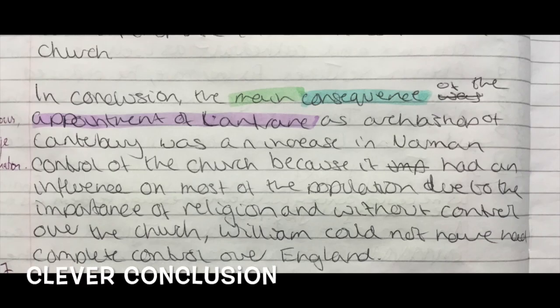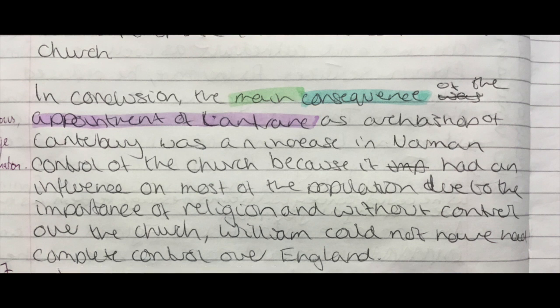Here's a wonderful conclusion and a great way to do one: 'the main consequence of the appointment of Lanfranc was an increase in Norman control of the church, because of an influence on most of the population due to the importance of religion, and without control over the church William could not have complete control over England.' It's saying this is important because it affected pretty much everybody, and then it affected other things later on - knock-on consequences. It's an example of relative importance and it's done really cleverly, not for the sake of it. If you're not sure, don't do it - just explain why your main reason is so important, but where you can, like here, this is where it's a good tool to have.